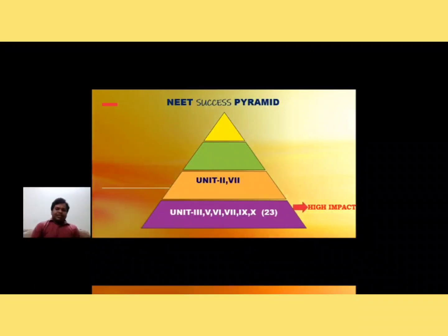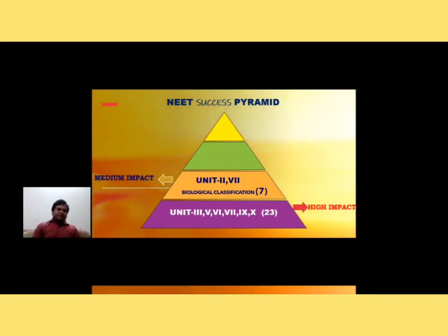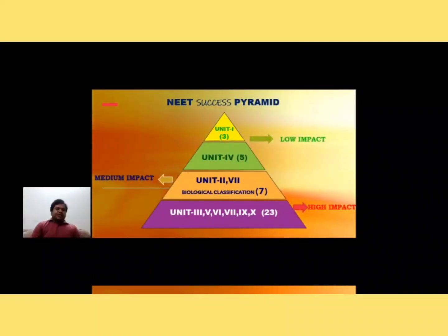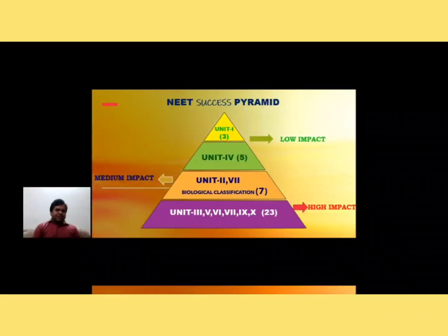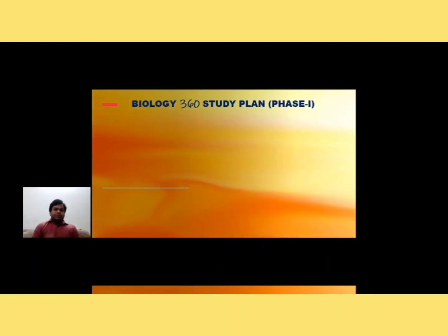Next, Units 2 and 7, along with Biological Classification, are medium impact topics — Unit 2 has 3 topics, Unit 7 has 3 topics, and Biological Classification makes it 7 topics total. They are medium impact because content and MCQs are almost equal. Then Unit 4 (5 chapters) and Unit 1 (3 chapters, since one topic is already covered) are low impact topics, because compared to their volume, the number of MCQs asked is always less.